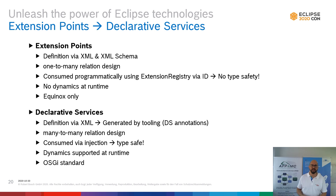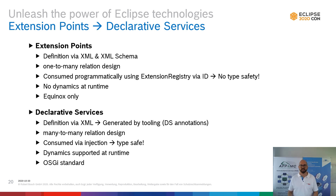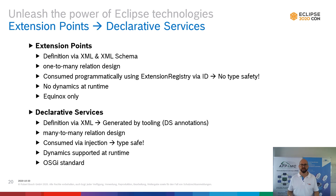Declarative services, on the other hand — yes, they're also defined via XML, but you're not writing the XML anymore because we have DS annotation support, even in Eclipse PDE (though only to DS 1.3, which is fair enough). We have a many-to-many relation design: a service is published and anyone can consume it. You consume a service via injection, so it's type safe. Dynamics are supported at runtime — if you stop a service or a bundle, the service can come and go at runtime. And it's an OSGi standard, so if you switch to another OSGi runtime, things still work.